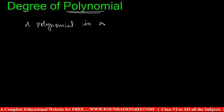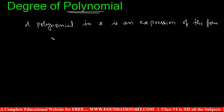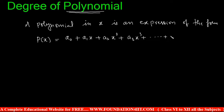A polynomial in x is an expression of the form: P(x) = a₀ + a₁x + a₂x² + a₃x³ + ... + aₙxⁿ. This is the general form. Here a₀, a₁, a₂, ... aₙ are all real numbers — these are the coefficients before x.